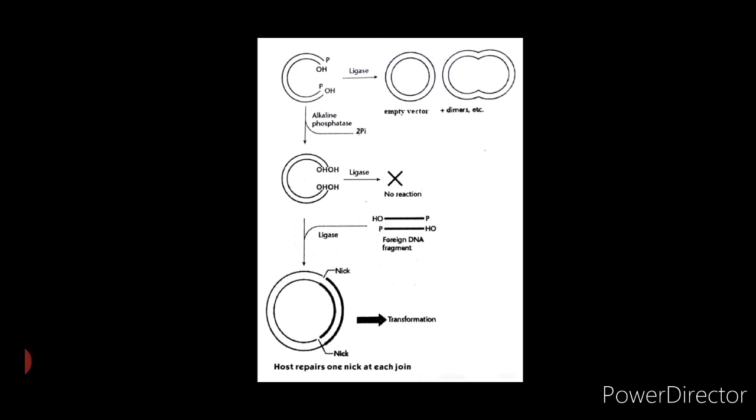Now let us understand the application of calf intestinal phosphatase, or alkaline phosphatase enzyme. Linearized cloning vectors can be prevented from recircularizing by dephosphorylation with alkaline phosphatase. The ligation reaction is performed to favor the formation of recombinants. This can be done by following two approaches.